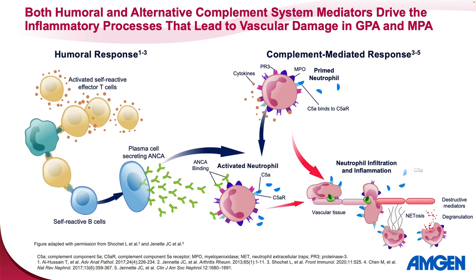Activated neutrophils then migrate to and infiltrate the vascular endothelium where they release destructive mediators through netosis and degranulation that perpetuate vascular inflammation and damage. At this time, more C5a is released which recruits and primes additional neutrophils, leading to an amplification loop that drives inflammation and vascular damage.